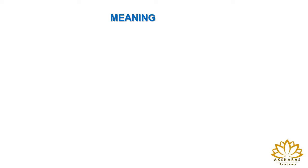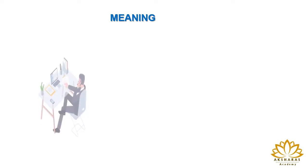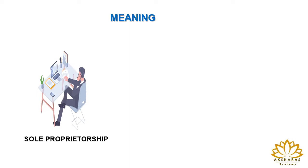Now let's see the meaning of partnership firm. Before that, let's just recap what is sole proprietorship. Sole proprietorship is where there will be one individual who will invest capital in the business and carry out the business activities. He is the only owner of the business and has control over the business activities. In accounts, you would have prepared the final accounts like trading account, profit and loss account, and the balance sheet.